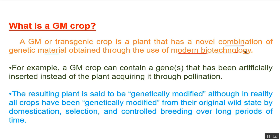For example, a genetically modified crop can contain a gene that has been artificially inserted, instead of the plant acquiring it through pollination — which is the natural process. When a plant acquires a gene through natural pollination, it is not a genetically modified crop. But once we transfer the gene of one plant or any species to another crop, then it is called a genetically modified crop.